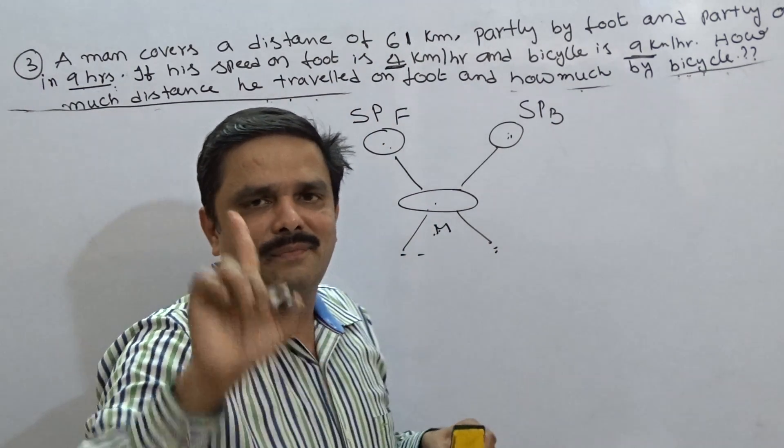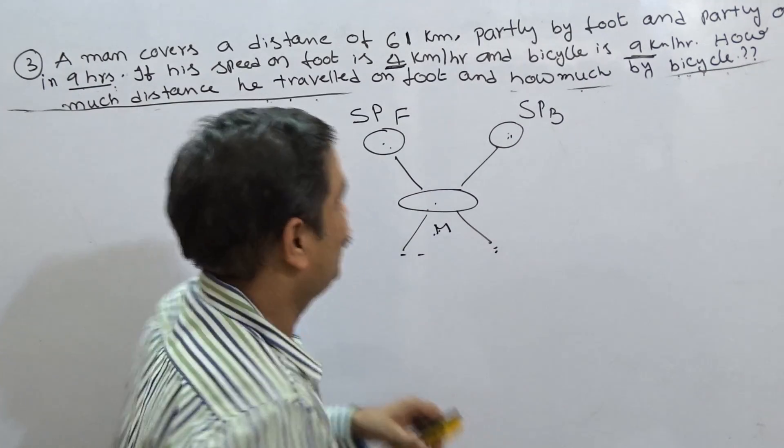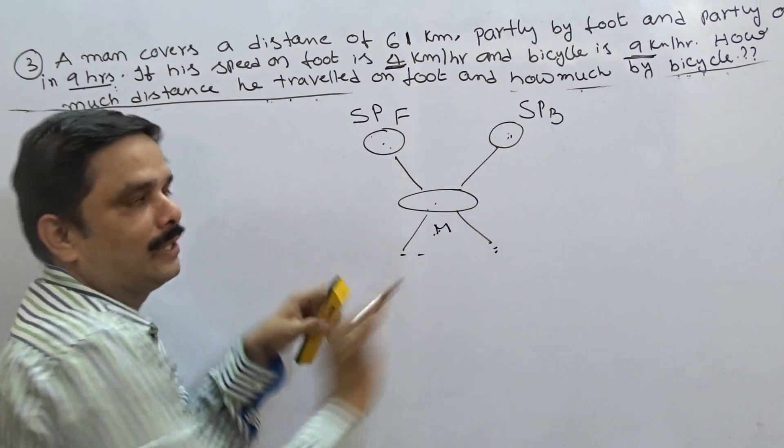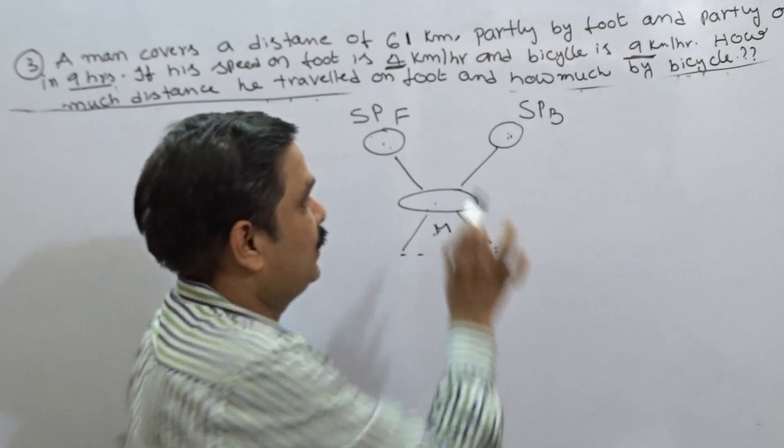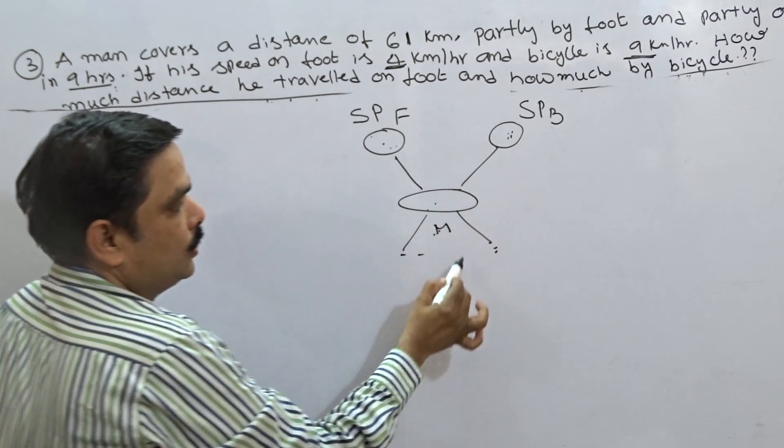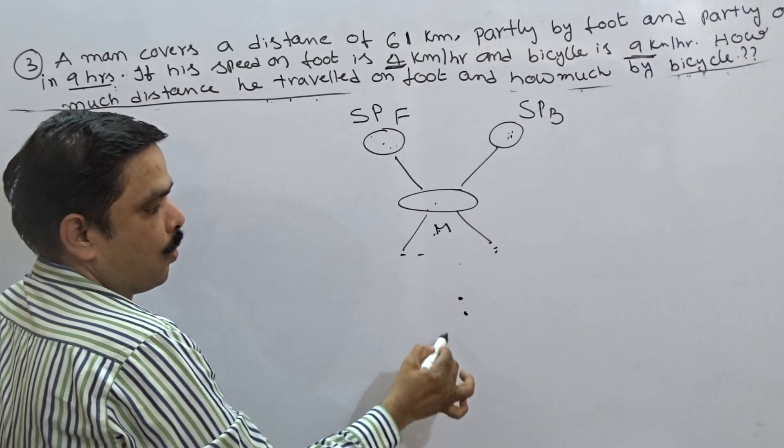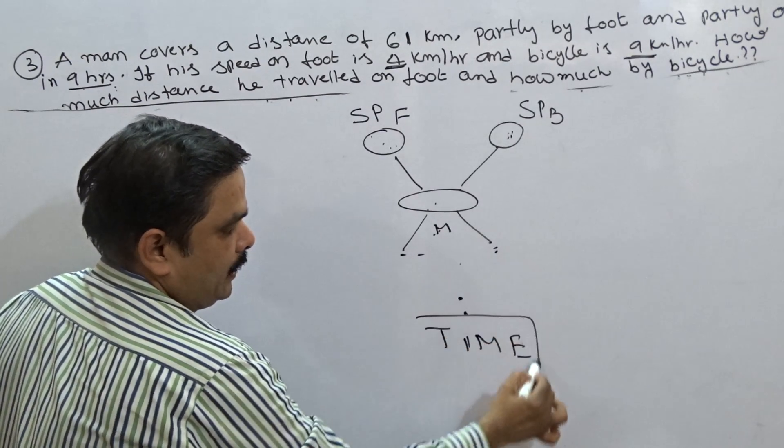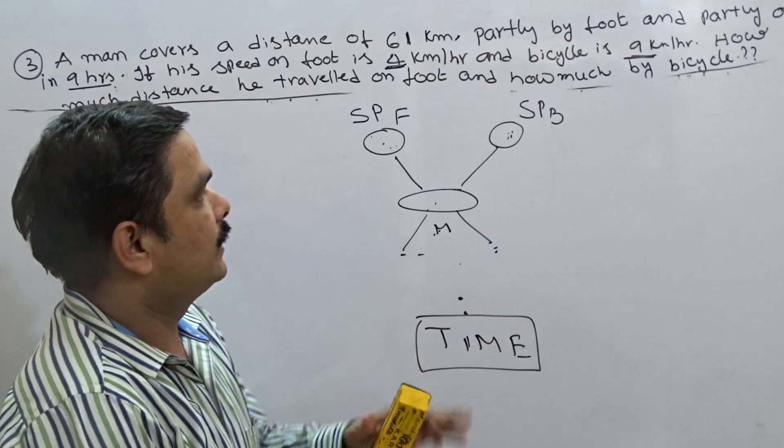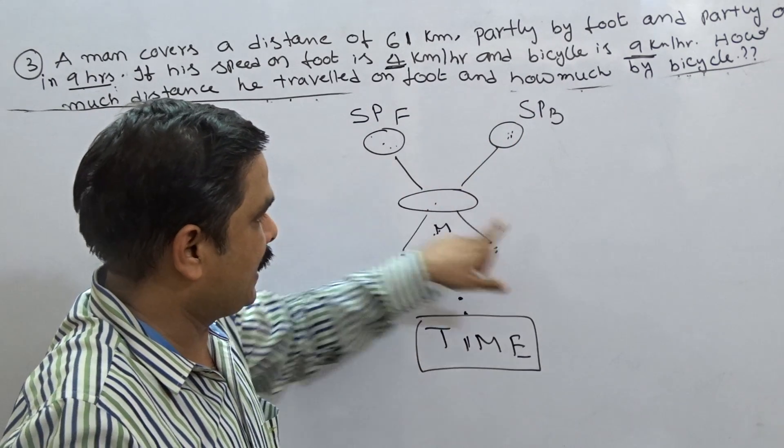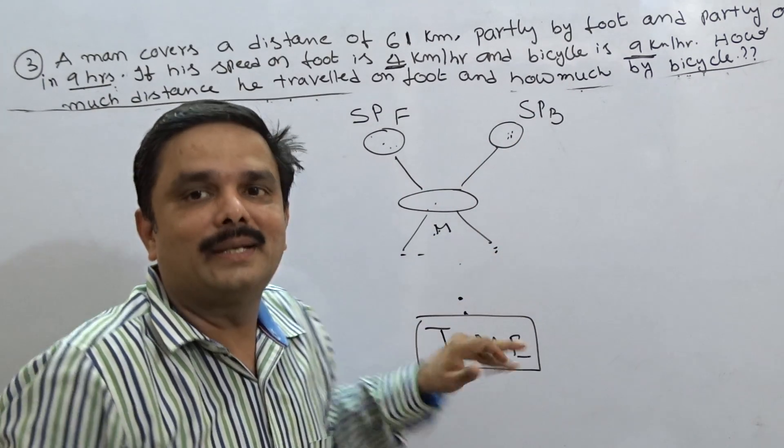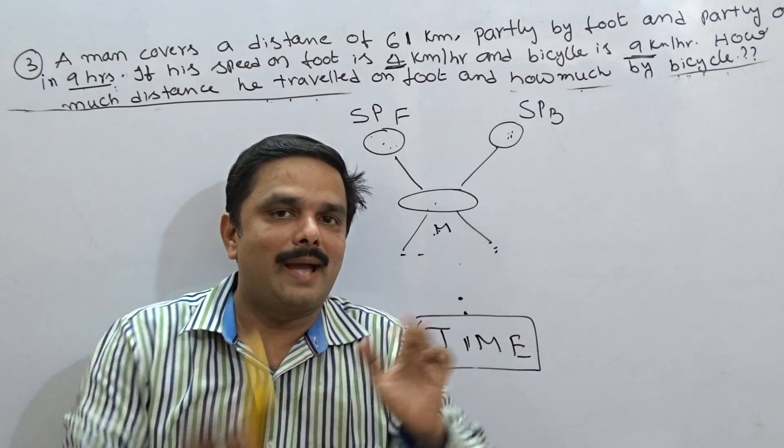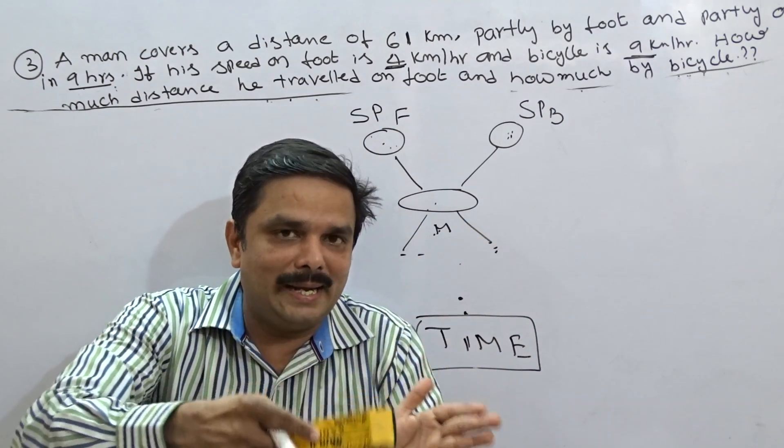But one very, very important thing here that when you are starting with speed, always remember, according to allegation rule, when you are starting with speed, you will end up the ratio of time. Very, very important thing. When you are starting with speed, we will be ending up in time. That is the simple shortcut here. Start with speed, apply the rule of allegation, you will end up in time.